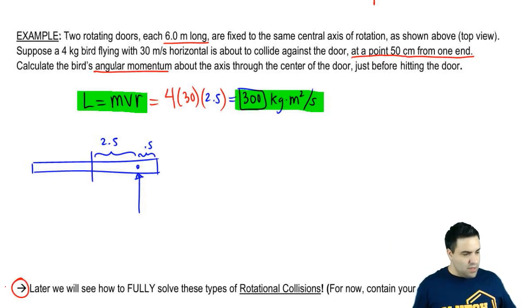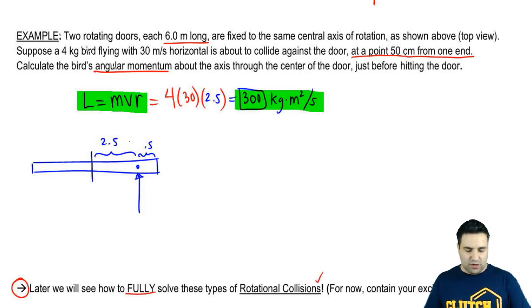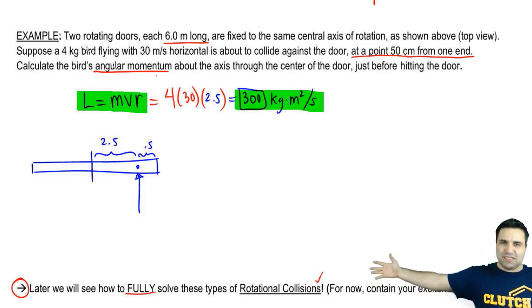Just warning you that this is going to come back later when we fully solve these types of rotational collisions. Later on, this is going to collide. The door is going to spin and we're going to actually be able to calculate how fast the door spins, but not yet. So continue your excitement and let's keep going. Let me know if you have any questions.